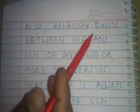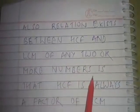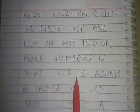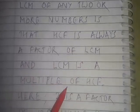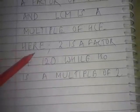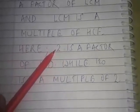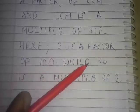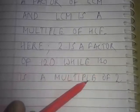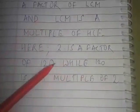Another relation exists between HCF and LCM: HCF is always a factor of LCM, and LCM is always a multiple of HCF for the same numbers. In the question we solved, 2 is the HCF and is a factor of 120, which is the LCM. Similarly, 120 is the LCM and is a multiple of the HCF 2. These types of relations are generally asked in one-mark questions.